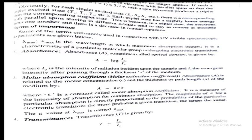The next term is absorbance, also called optical density. It is given by A equals log I0 by Ix, where I0 is the intensity of radiation incident upon the sample and Ix is the emergent intensity after passing through a thickness x of the medium. Always remember: A equals log I0 by Ix.